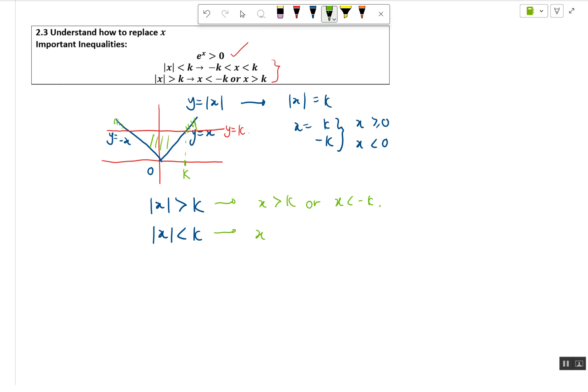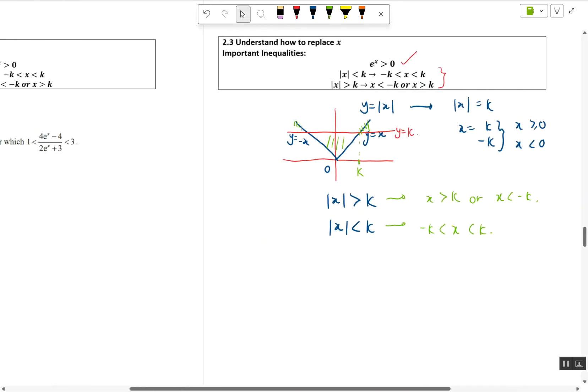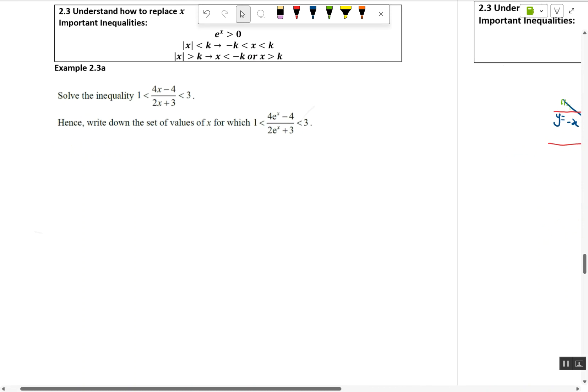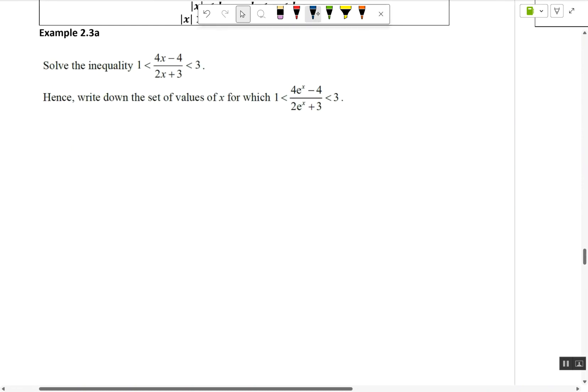It will mean that x is in between negative k and k. You must know this important part first. So next we go on to simultaneous inequalities like this. First, let's break this up into (4x - 4)/(2x + 3) < 1, or (4x - 4)/(2x + 3) < 3. So let's solve this. Now I need to bring this over first, so this will become...